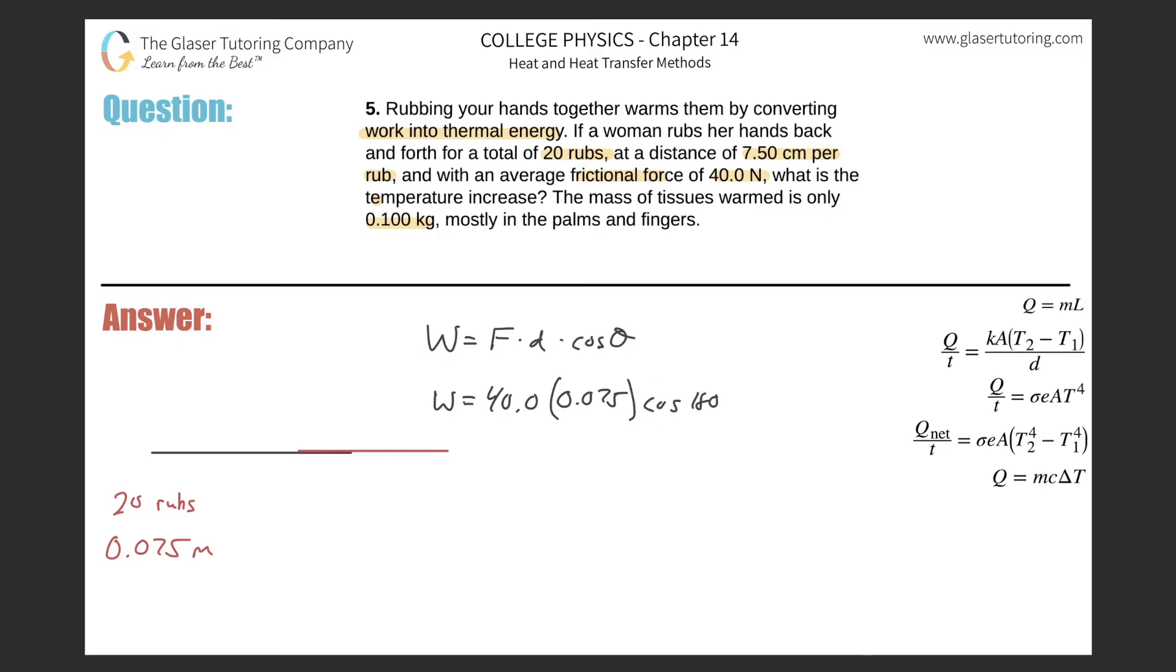Here we have now the work will be equal to some negative number. This is 40 multiplied by 0.075. That comes out to three, so this is negative three joules. This means that per rub, three joules of energy is coming out or being pulled out of your hand.